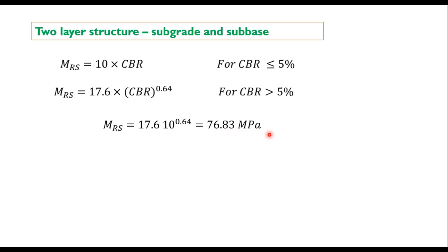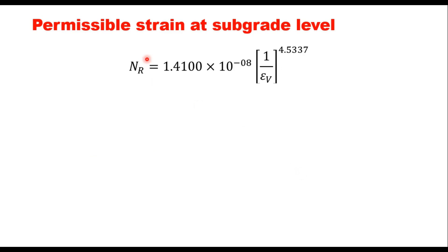And the Mr value of GSB is given by this equation: 0.2 into h as thickness in millimeter power 0.45 into Mr support. Mr support here is 76.83, and that gives you Mr value of GSB layer 150.80 MPa. Now let us calculate what is the permissible limiting strain at the top of subgrade using this equation: Nr equals 1.41 into 10 power minus 8, 1 upon epsilon z power 4.5337.